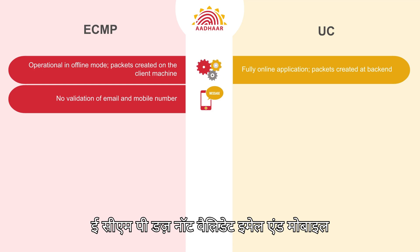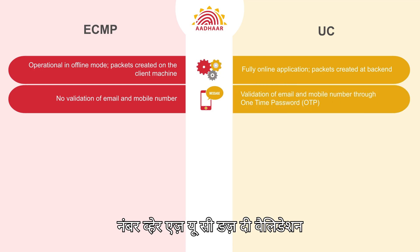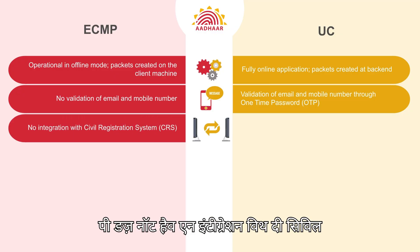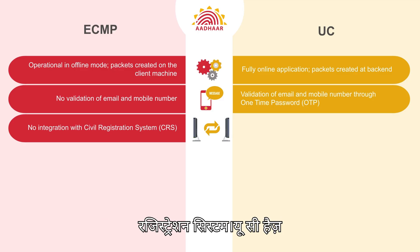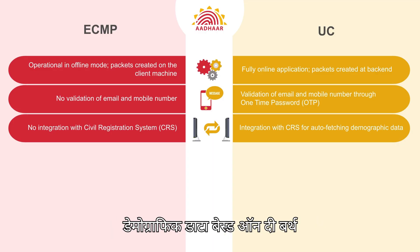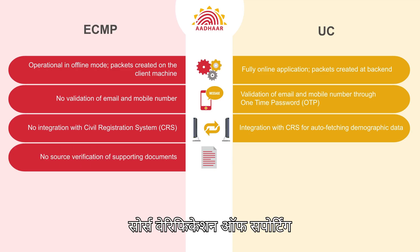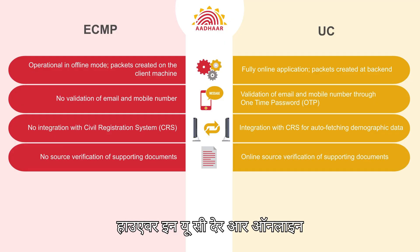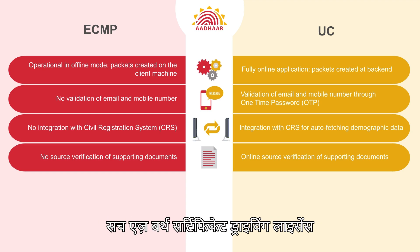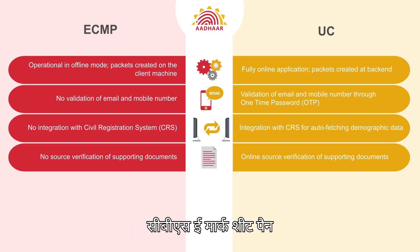eCMP does not validate email and mobile number, whereas UC does the validation through one-time password. eCMP does not have an integration with the civil registration system; UC has an integration with CRS for auto-fetching demographic data based on the birth registration number. There is no source verification of supporting documents in eCMP; however, in UC there is online source verification of supporting documents such as birth certificate, driving license, CBSE mark sheet, PAN, passport, etc.